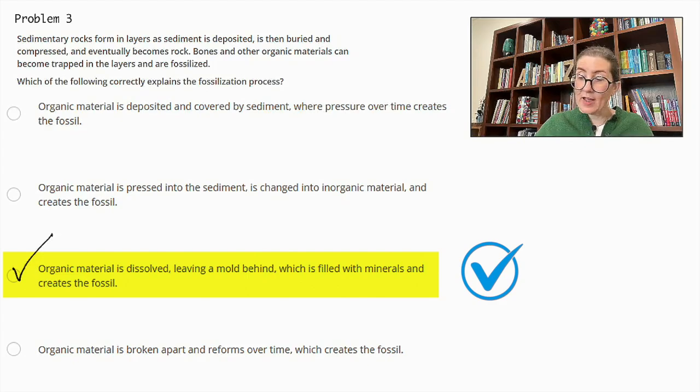Why are the other answers incorrect? This is incorrect because the organic material does not typically reform into a fossil, rather it is replaced by minerals. Then at the top, this description is too simplistic and doesn't explain the mineralization process. So we can cross that out as well. Next, this lacks detail about the dissolution and mineral replacement process, which is crucial for fossilization. Thus, the correct process involves the dissolution of organic material, leaving a mold that is filled with minerals to create the fossil.